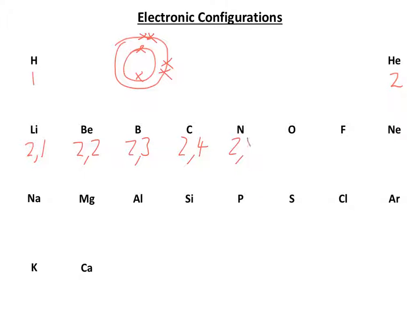Nitrogen has five electrons in its outer shell, so we add another one there. Oxygen is two, six. Fluorine is two, seven. And neon is two, eight — so neon's outer shell is full, which makes it very unreactive. We add that final electron, and that shell is now full.